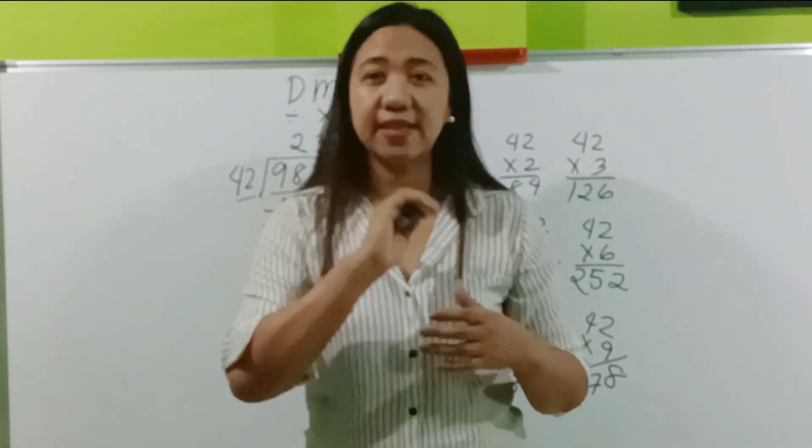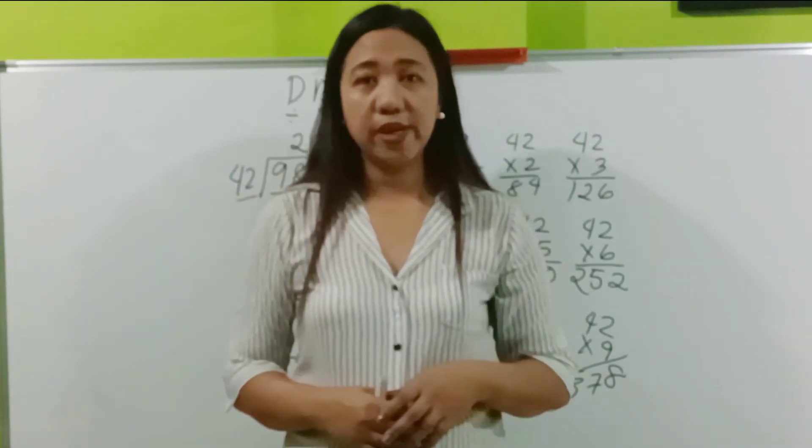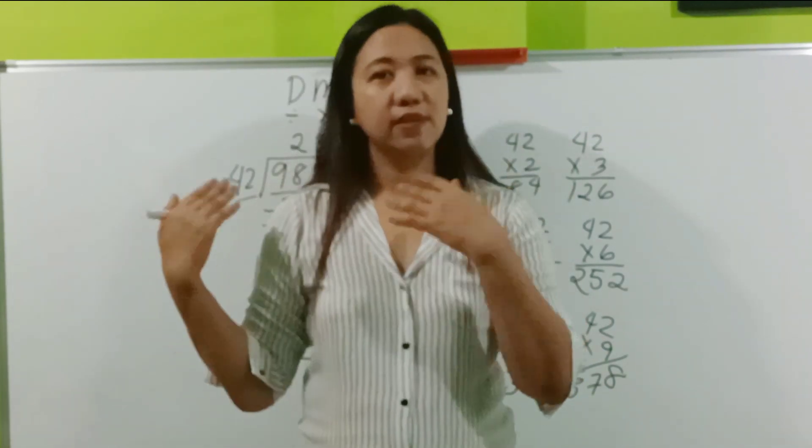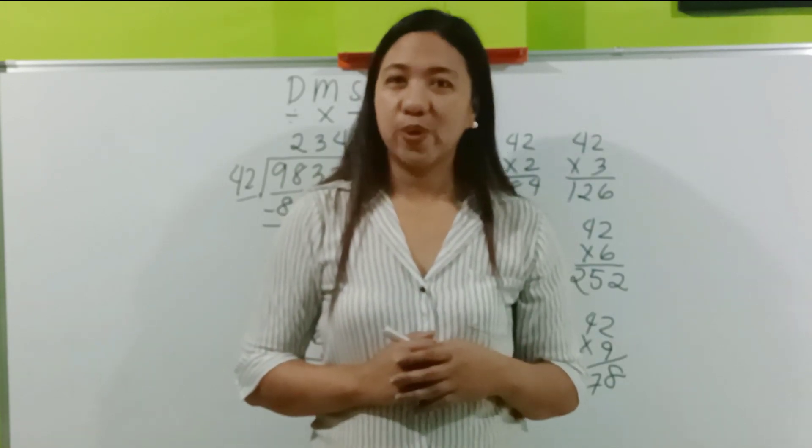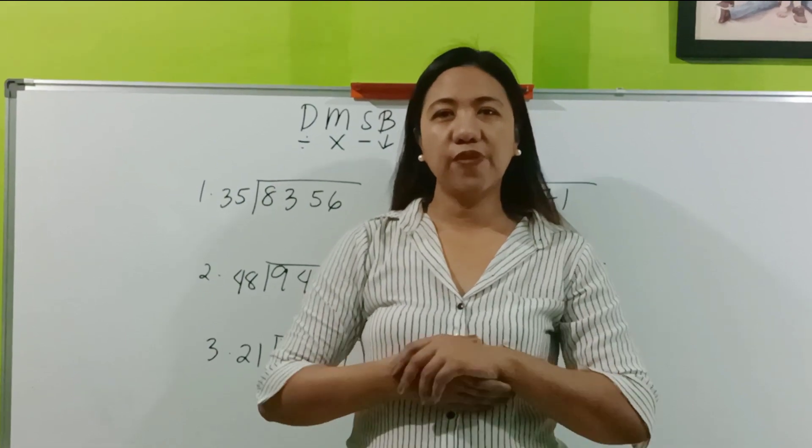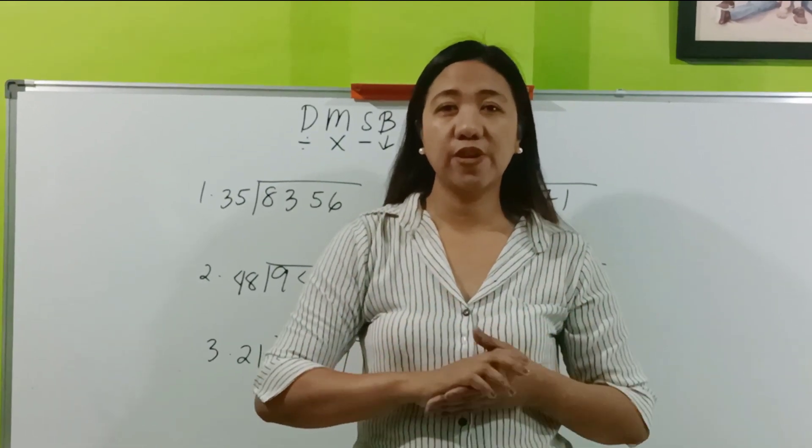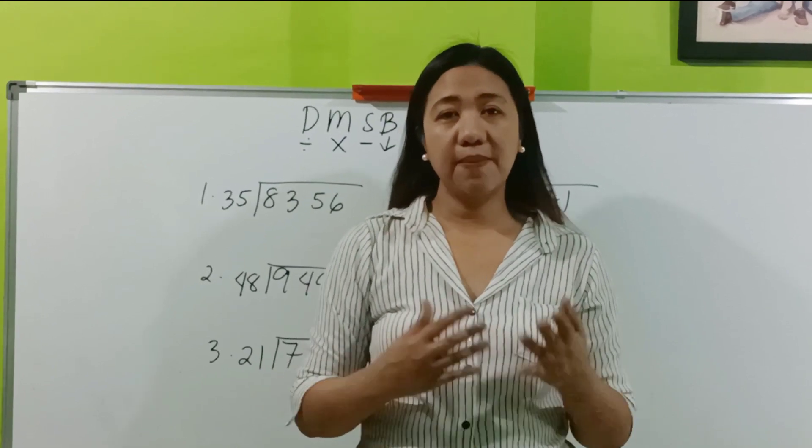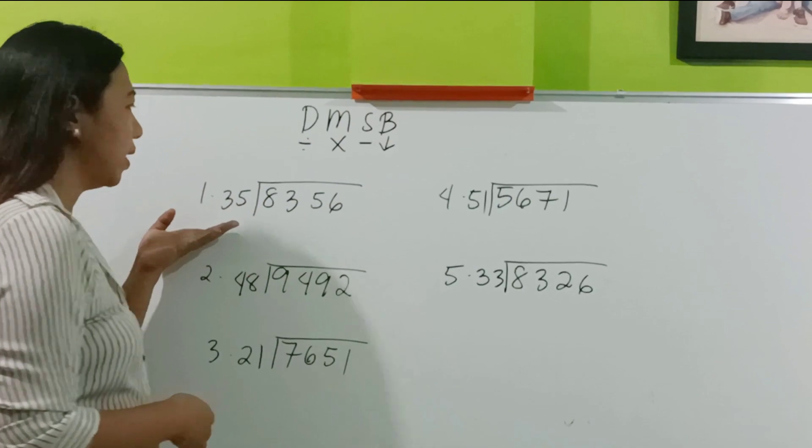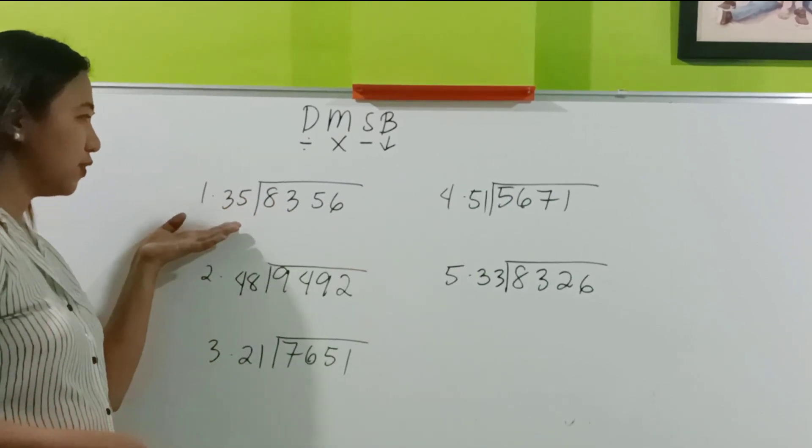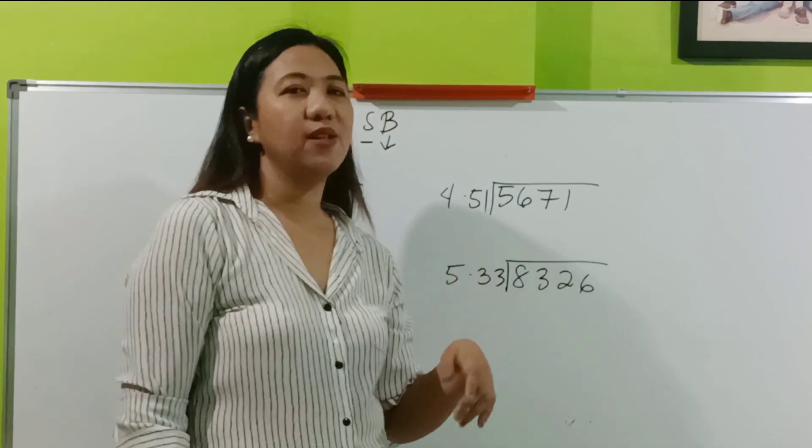So, those are the 3 easy and effective methods which you can employ in your classes. Or if you are a learner, then you can follow those methods. Are you ready for the quiz? Okay, so I have here 5 items. So, you may pause this video for a while. Then come back for the answers later. So, we have number 1, 8,256 divided by 35. Number 5, 8,226 divided by 33.